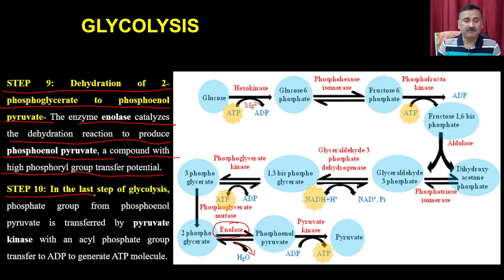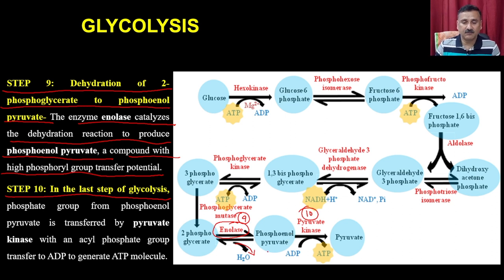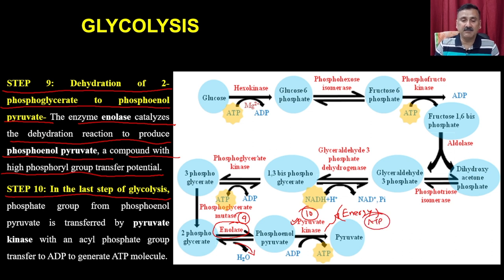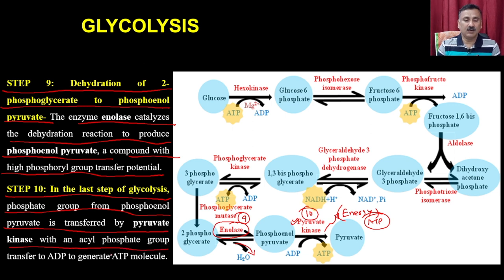From 2-phosphoglycerate, enolase removes one molecule of water to form phosphoenolpyruvate. In step number 10, the last step, phosphoenolpyruvate gives up the phosphate group and generates pyruvate. The enzyme is pyruvate kinase. Here again, you directly produce energy — instant ATP. In step 10, the phosphate group from phosphoenolpyruvate is transferred by pyruvate kinase to ADP to generate the ATP molecule.